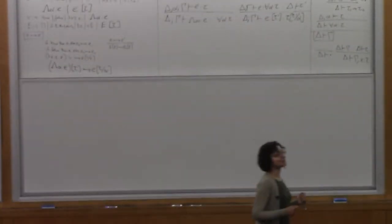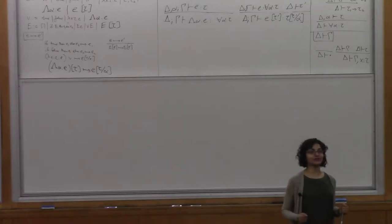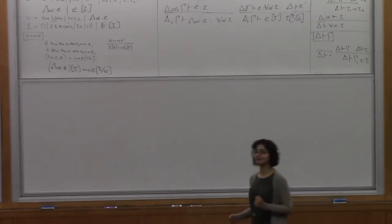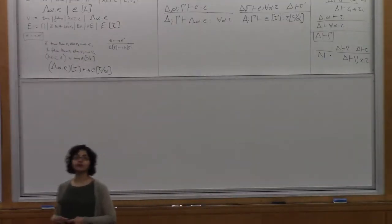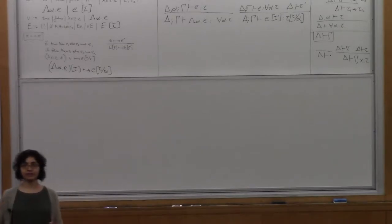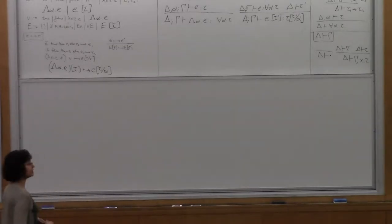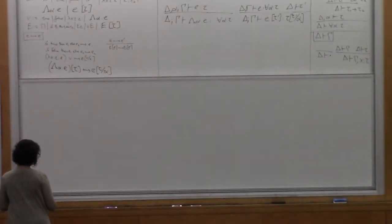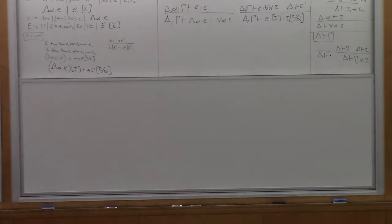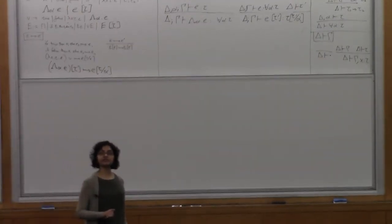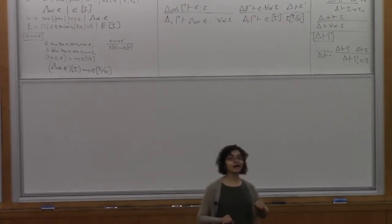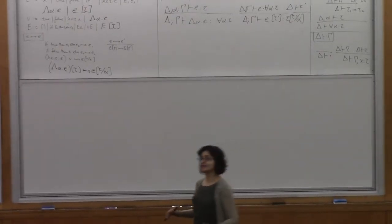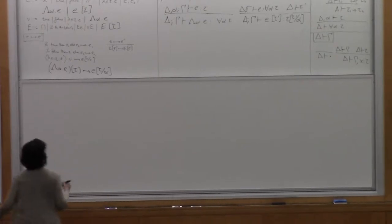Yesterday we talked at the end of lecture about contextual equivalence or observational equivalence. Today we're going to set up a logical relation for reasoning about equivalence of programs in System F. Our definition and specification of System F is up on the board — the syntax, operational semantics, and static semantics. Let's start to set up a logical relation for this.